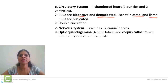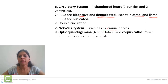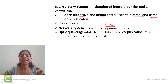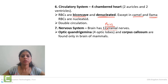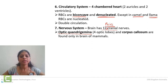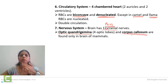Next characteristic is about the nervous system. When we consider the nervous system of mammals, there are 12 pairs of cranial nerves. Two important peculiarities in the mammalian brain are: presence of corpora quadrigemina and presence of corpus callosum. These two things are the peculiarity of the mammalian brain.